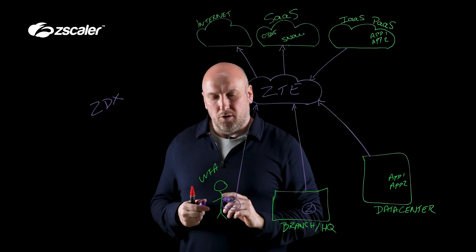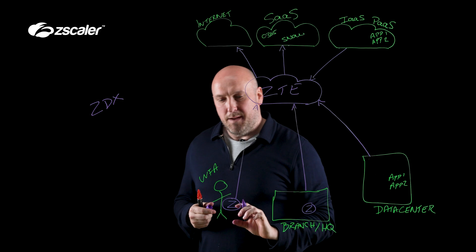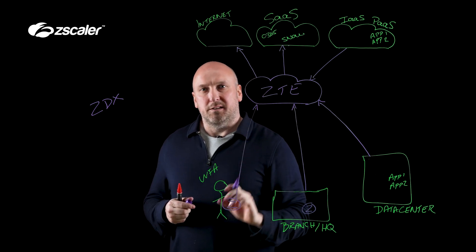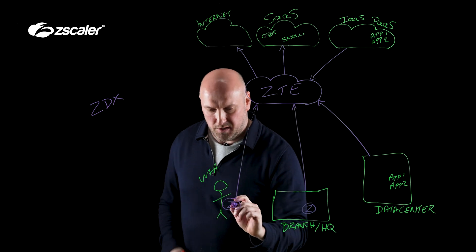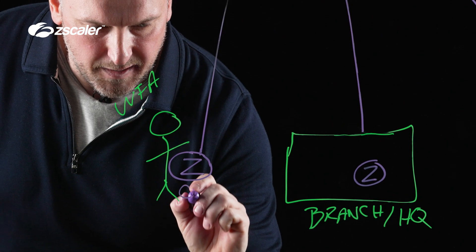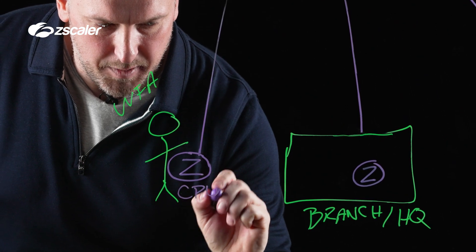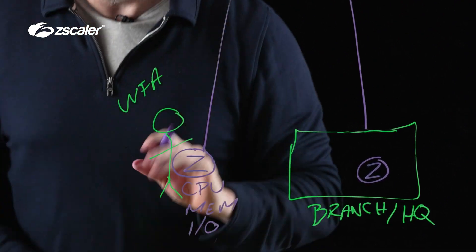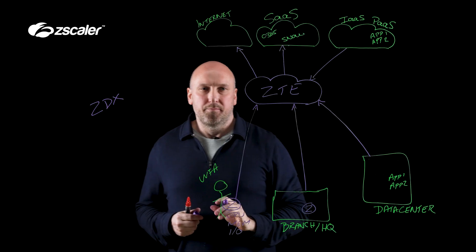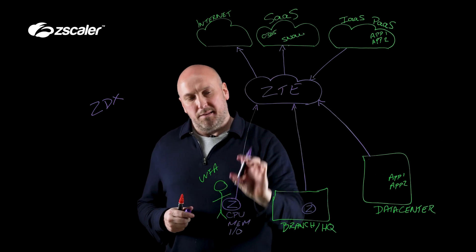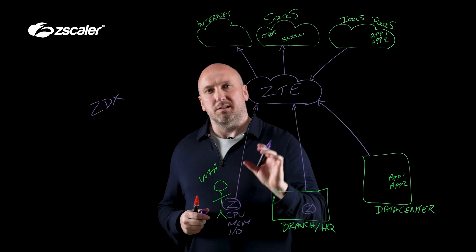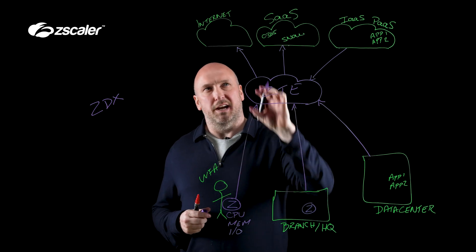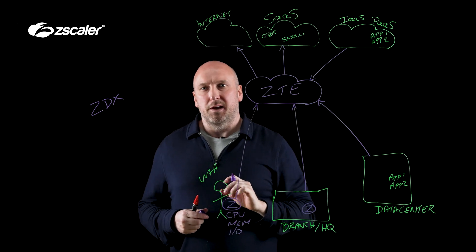What does it look like? Well, first, we use the same agent to forward the traffic — simply put, we don't need to deploy any hardware or additional software. We're going to look at things like the CPU, the memory, the disk IO, and lots of other metrics on that endpoint. Then we want to look at the end-to-end transit path, or what we call the cloud path, from the user through the Zero Trust Exchange and up to the relevant application.